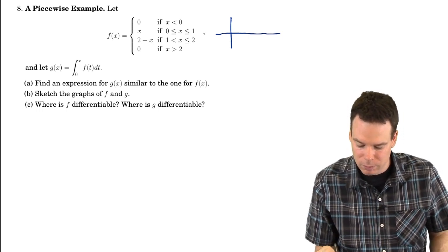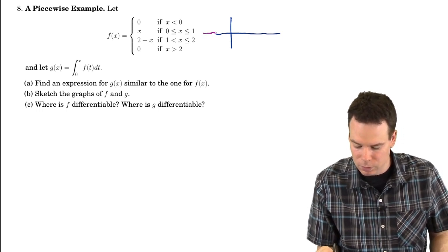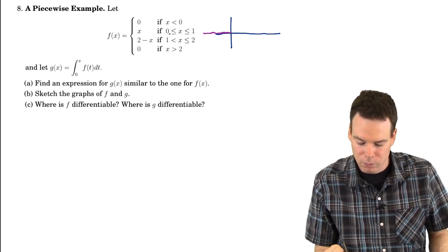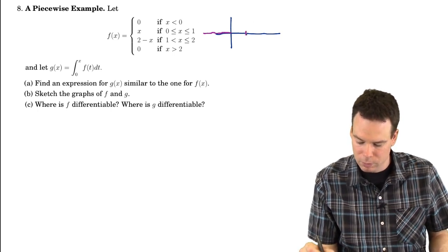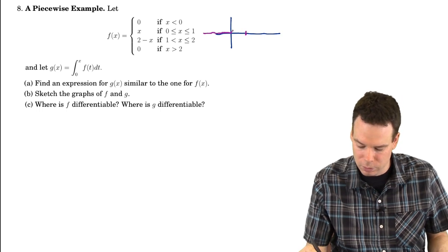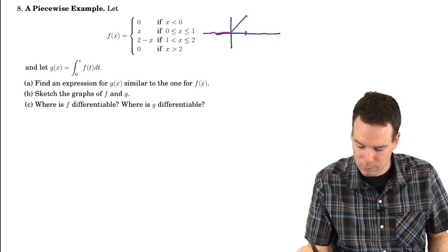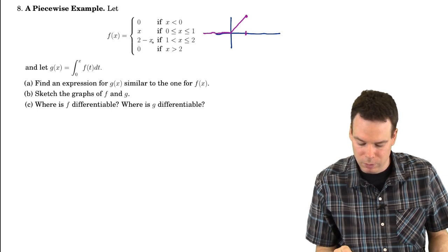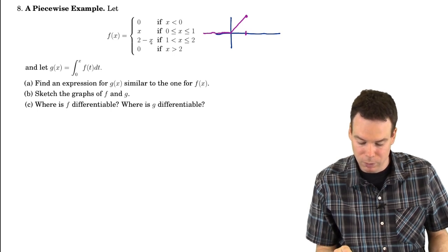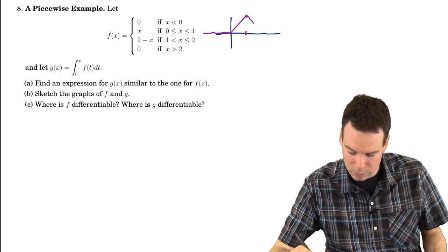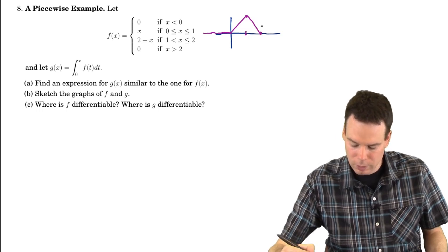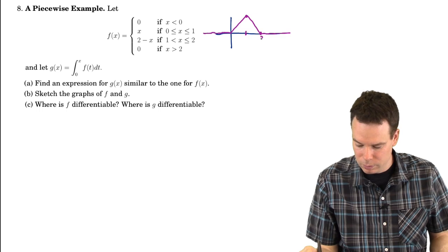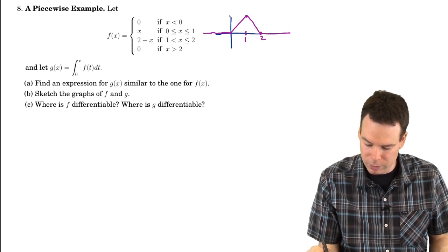For x less than 0, the function value is 0, so it's screaming along here. And then from 0 to 1, up to 1 here, it's just a linear function. And then from 1 to 2, it's also a linear function but now with negative slope. So it goes down. And then bigger than 2, it's still 0. So that's 2 and that's 1. And we had a height of 1 here.